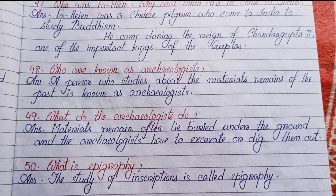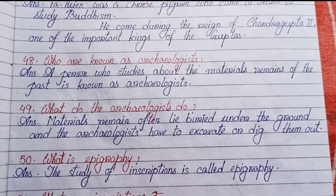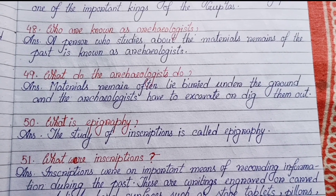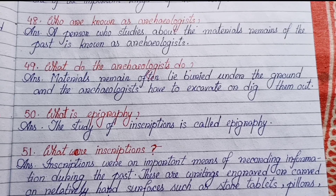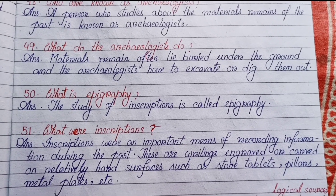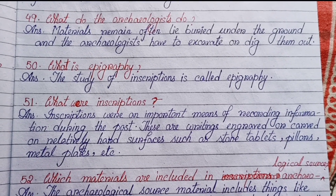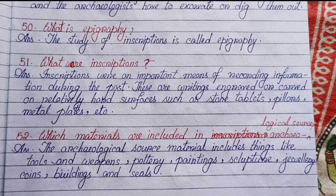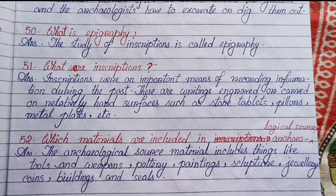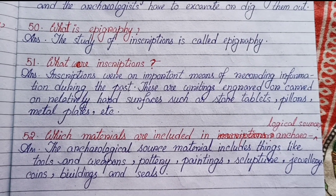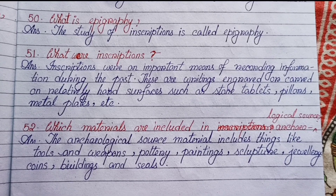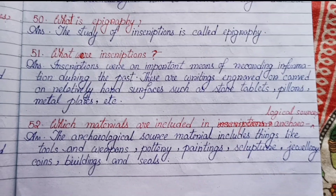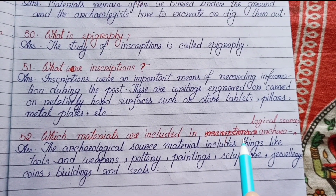Number forty-eight: Who are known as archaeologists? A person who studies the material remains of the past is known as an archaeologist. Number forty-nine: What do archaeologists do? Material remains often lie buried under the ground, and archaeologists have to excavate or dig them out. Number fifty: What is epigraphy? The study of inscriptions is called epigraphy. Number fifty-one: What were inscriptions? Inscriptions were an important means of recording information during the past — these are writings engraved or carved on relatively hard surfaces such as stone tablets, pillars, metal plates, etc.